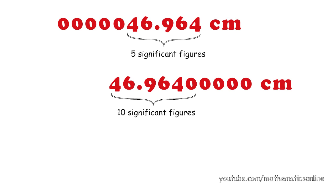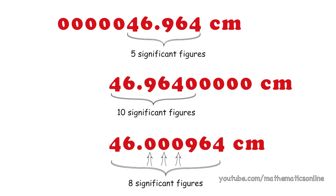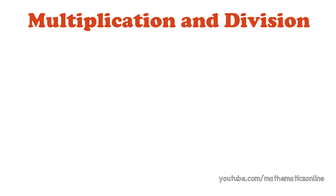In case you were wondering, the zeros in between numbers are also considered significant. Now the reason we want to know the number of significant figures that we have becomes very important when we multiply and divide.